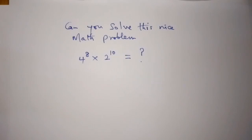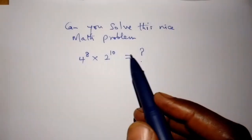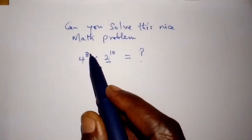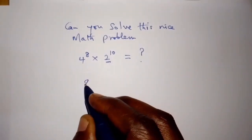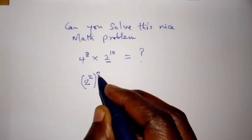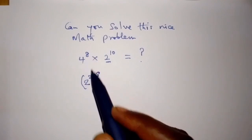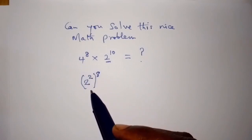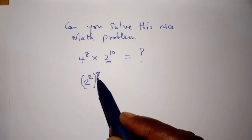Can you solve this nice math problem: 4 to the power of 8 times 2 to the power of 10? Let us have a common base of 2. We can write 4 to the power of 8 as 2 power 2, then into bracket 8 — that is, (2²)⁸ times 2 to the power of 10.